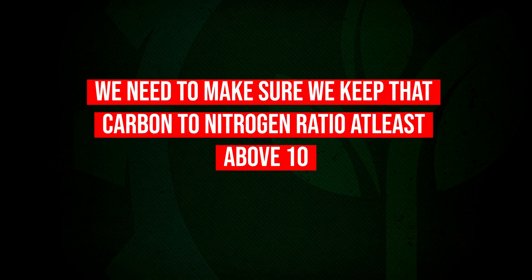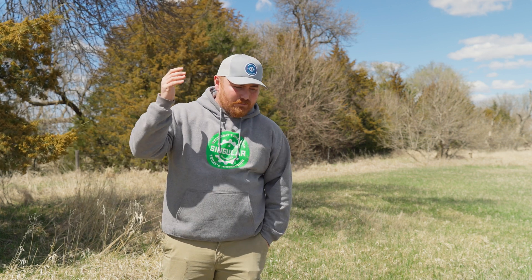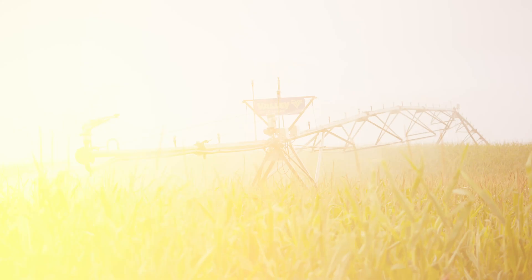In my perfect world, I like it at 12 or slightly higher. How do we figure this out? You can go through many different types of soil tests — the Haney test — to look at this carbon to nitrogen ratio number, and also making sure that our biology have a food source, because that's what happens with our carbon.